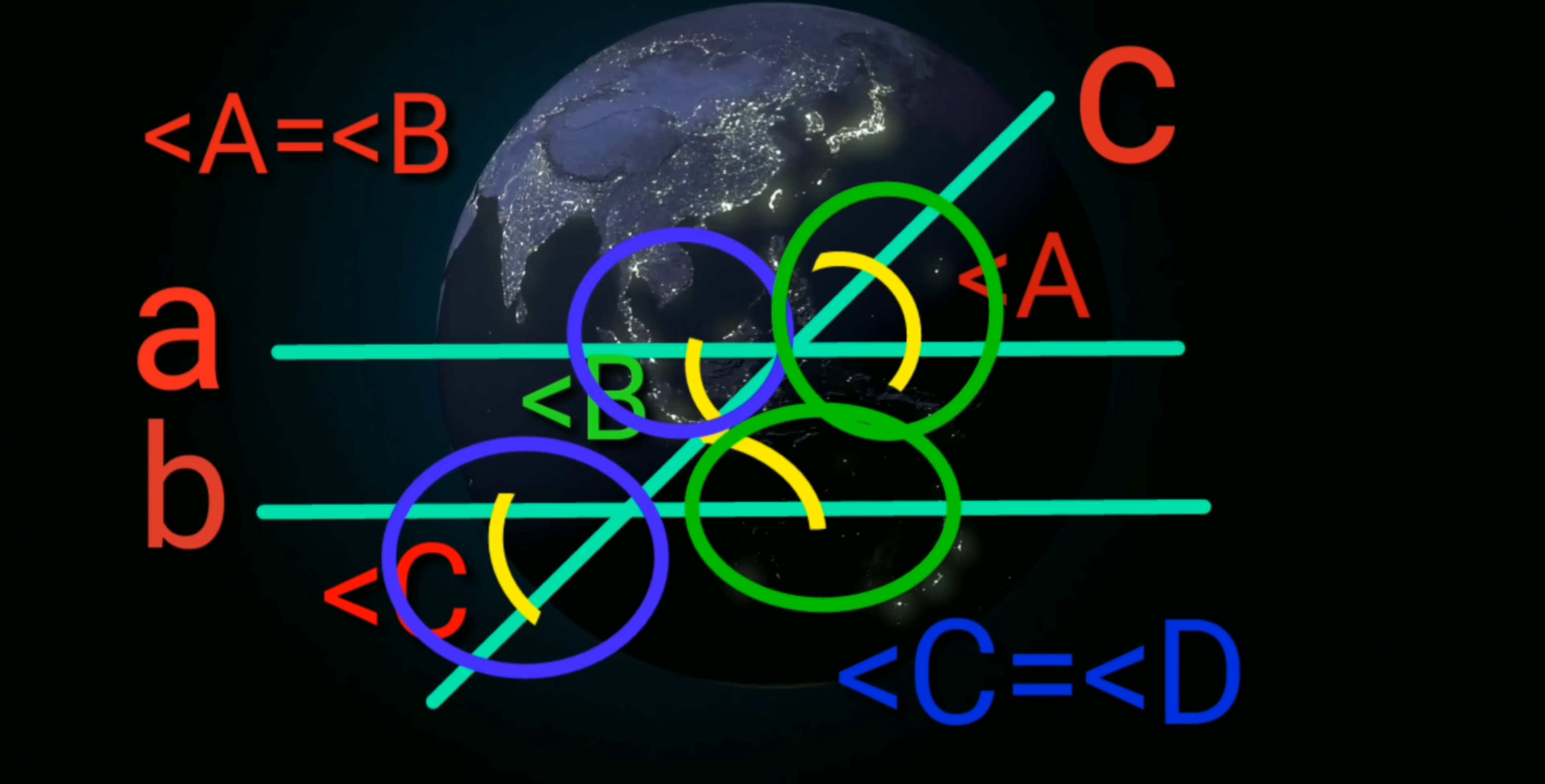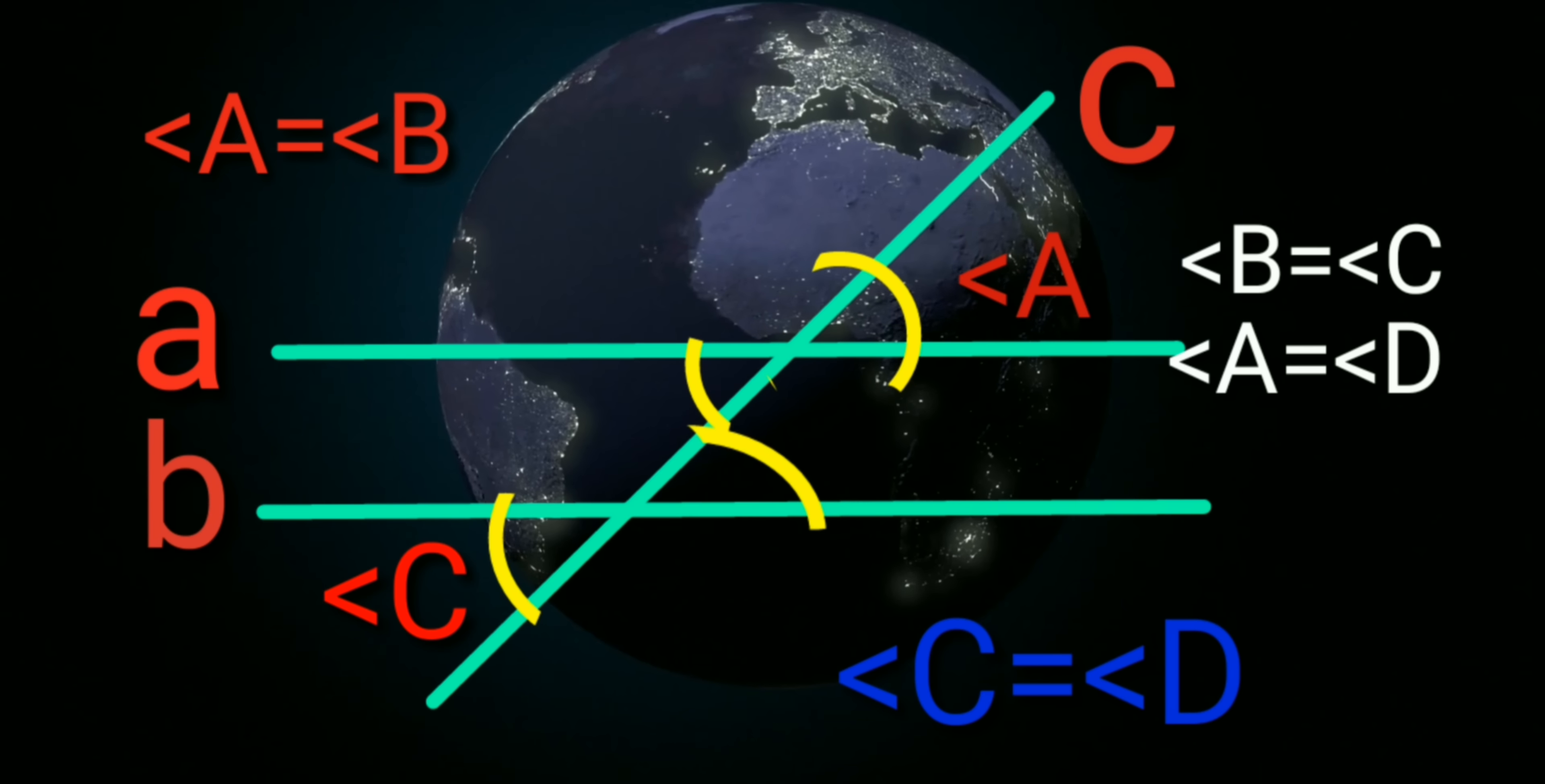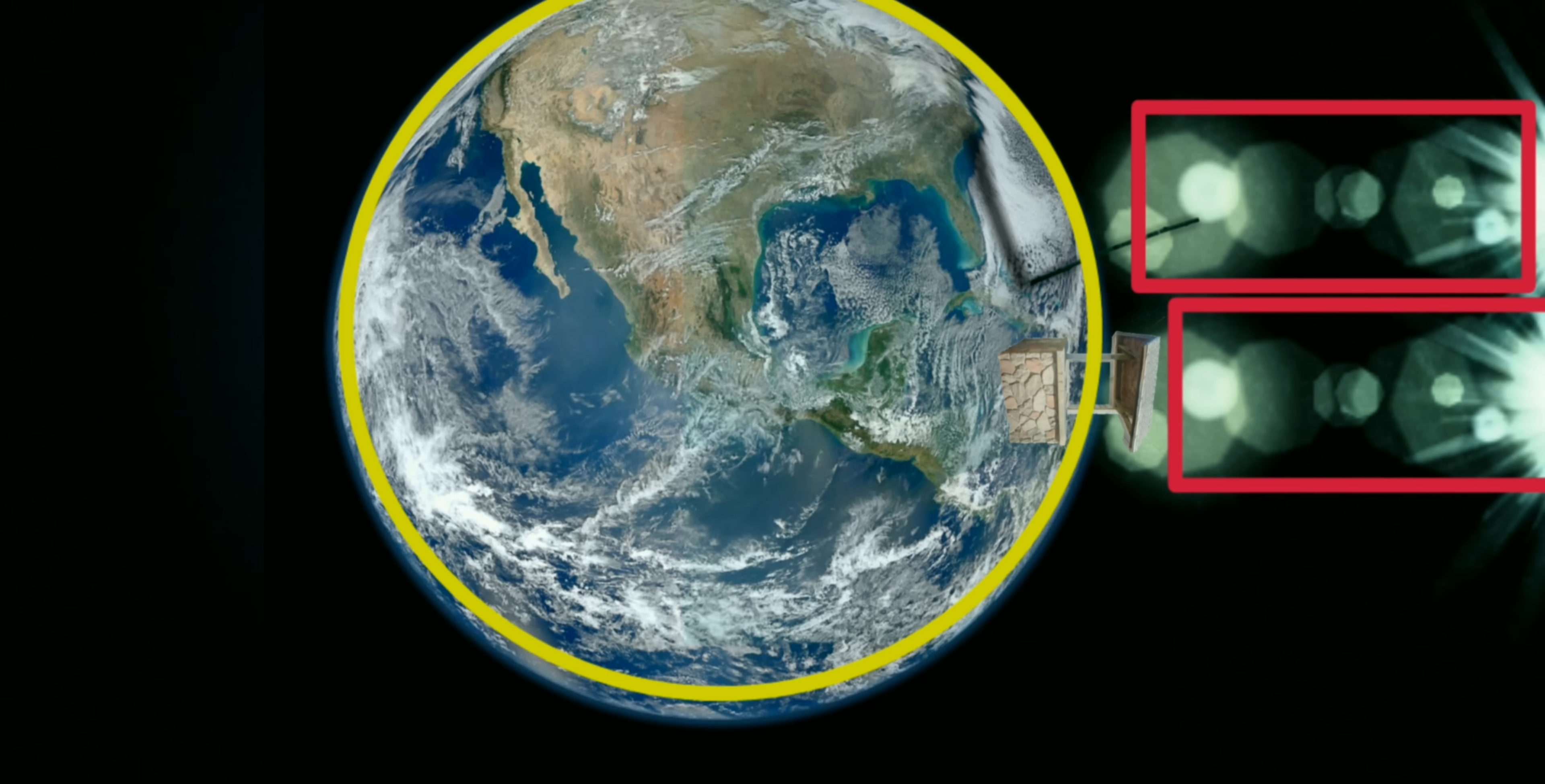Here angle A and angle B are equal as they are vertically opposite angles. And C and D are equal. And from corresponding angles theorem, we can say angle B equals angle C and angle A equals angle D. That's why angle A equals angle C.